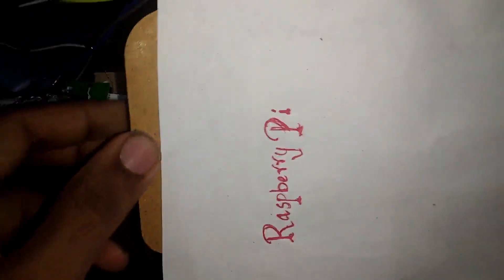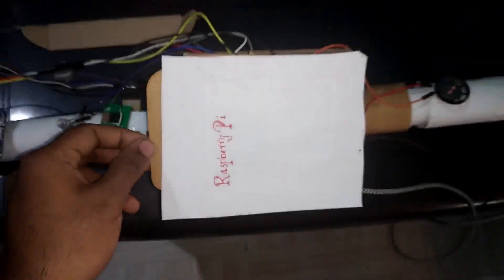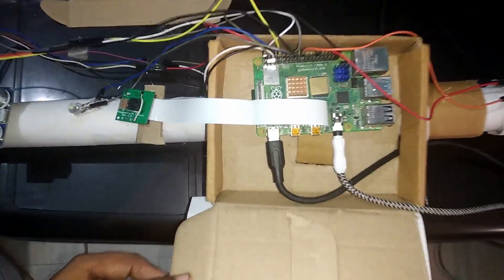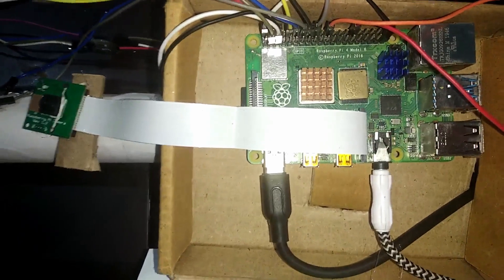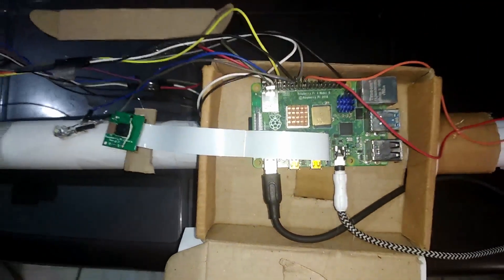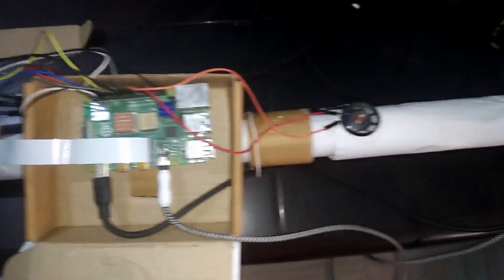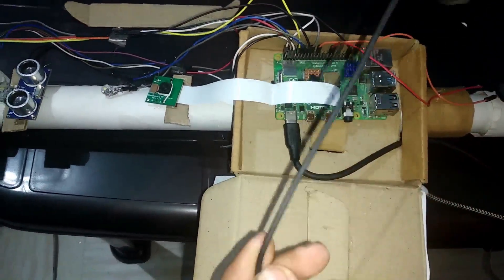When the ultrasonic sensor detects an obstacle, the buzzer, LED, and camera turn on. The LED provides better view and clarity for object recognition even in darkness. The recognized object names are given as voice feedback through an earphone to the blind person.